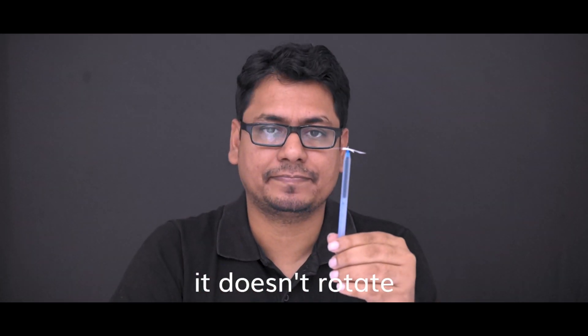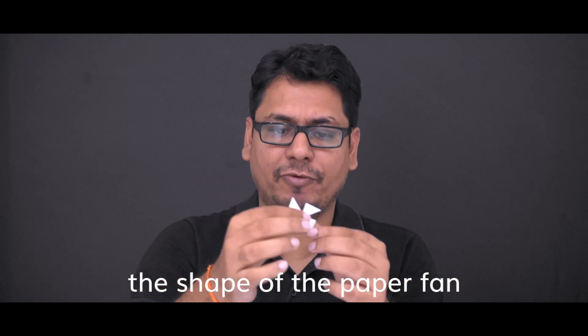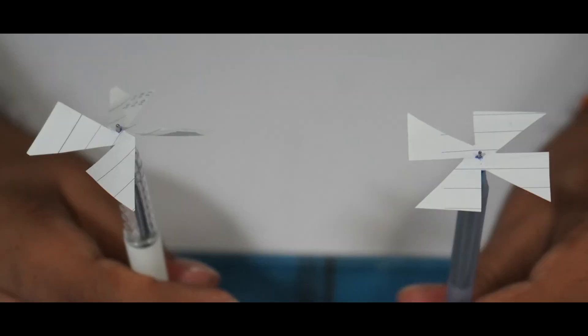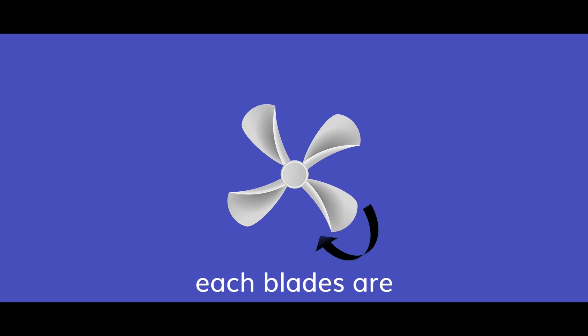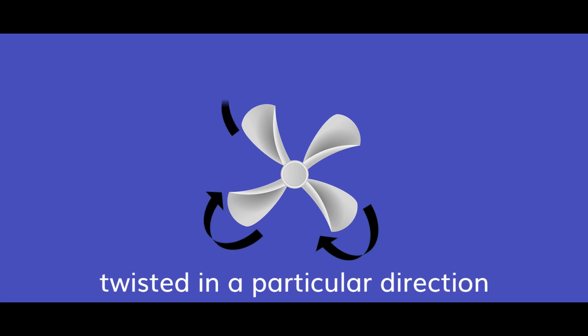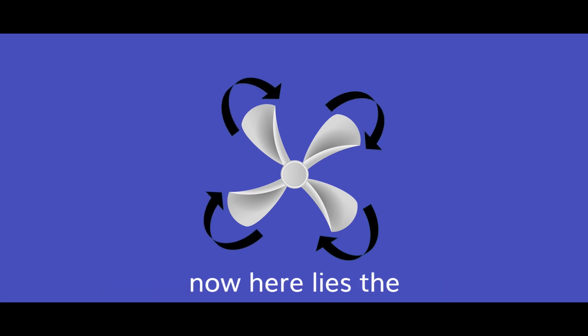It doesn't rotate, which means the shape of the paper fan is important. Do you see the difference? This paper fan is flat, while here there are four blades. Each blade is twisted in a particular direction. Now here lies the physics behind it.